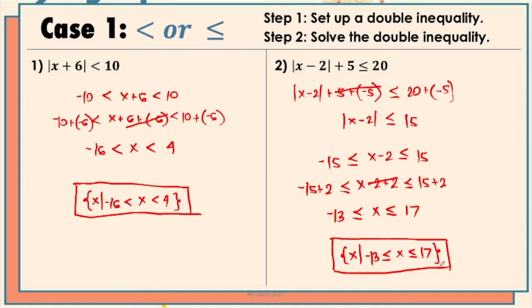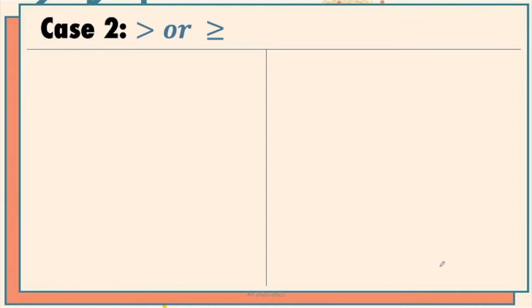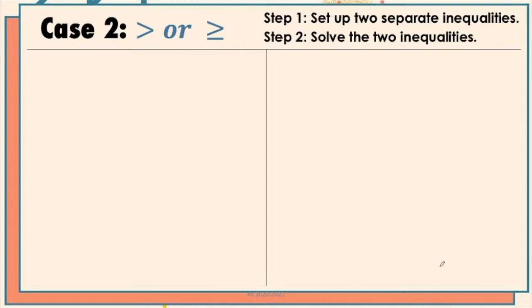Now let's move on to case 2, which applies when we have the greater than or greater than or equal to inequality symbols. The steps here are: step 1 is we're going to set up two separate inequalities, and step 2 is to solve for the two inequalities.